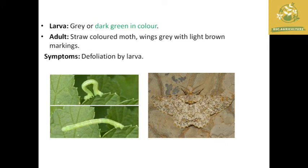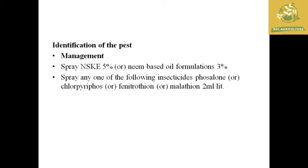The larvae are gray or dark green in color, and the adult is a straw-colored moth with gray wings with light brown markings. The major symptom of damage is defoliation of leaves by the larvae. The effective management against these larvae is spraying of neem seed kernel extract at 5% or neem-based oil formulation at 3% per liter in the field.